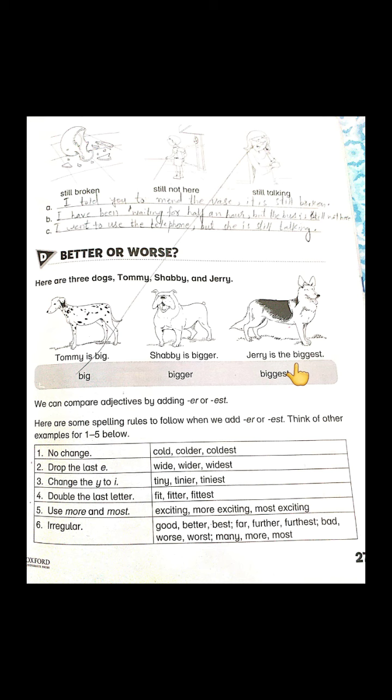Similarly, if we say 'tall building,' 'tall' is telling us the quality of that building. That is what adjectives are about. Now there is a new term: comparative and superlative adjectives.